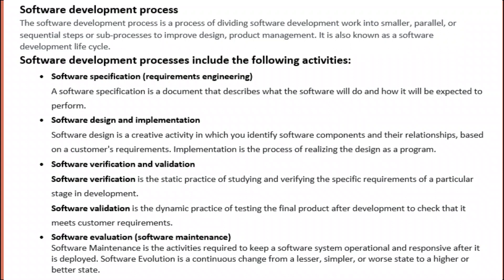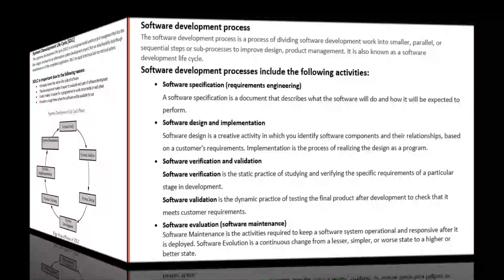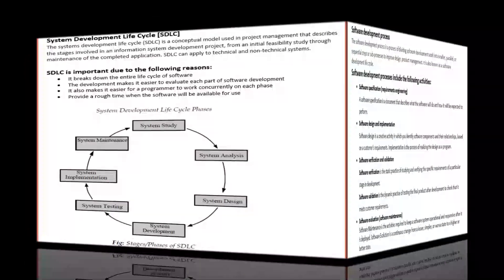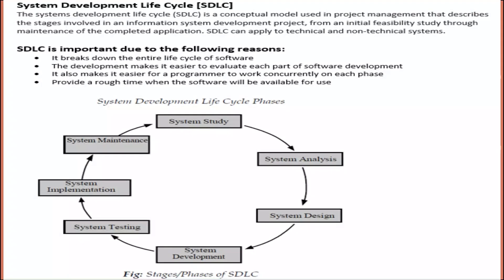Software maintenance is the set of activities required to keep a software system operational and responsive after it is deployed. Software evolution is a continuous change from a lesser, simpler, or worse state to a higher or better state.